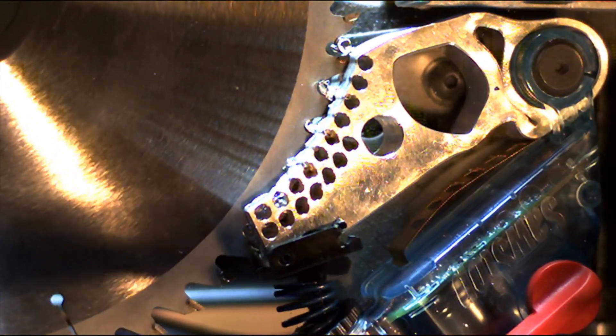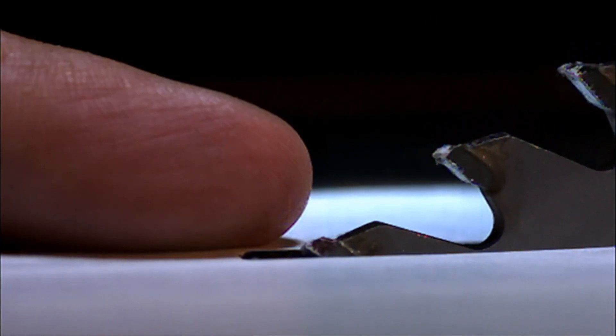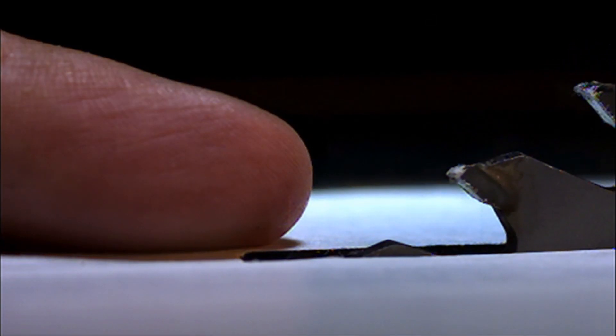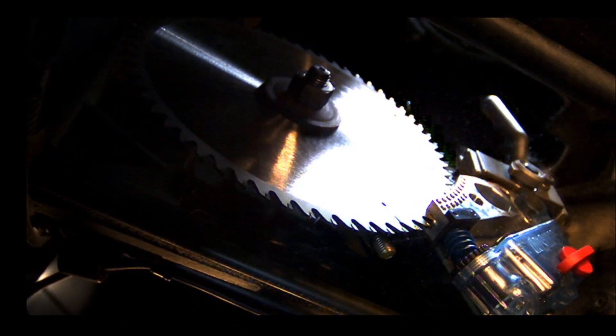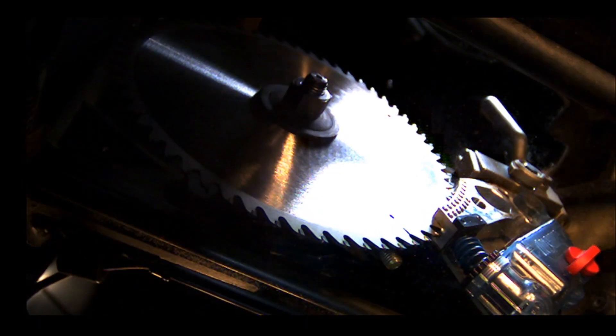The saw blade goes from 4,000 RPM to zero almost instantly. The blade's momentum forces it to retract below the table, and the motor is automatically shut off. All of that happens in less than five milliseconds.